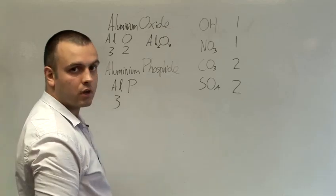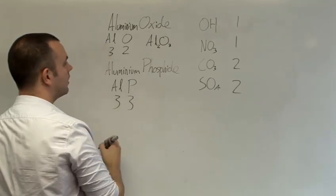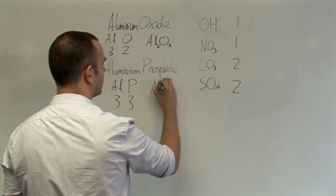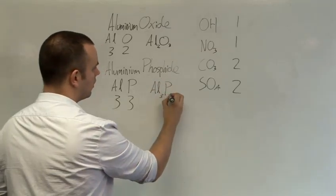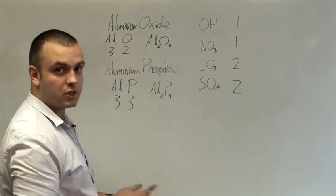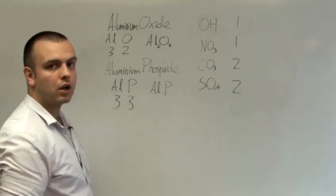Phosphorus, which is in group 5, has a valency of 3 as well. This means that you can write aluminium phosphide as Al3P3, but these threes can cancel to give the simpler AlP for aluminium phosphide.